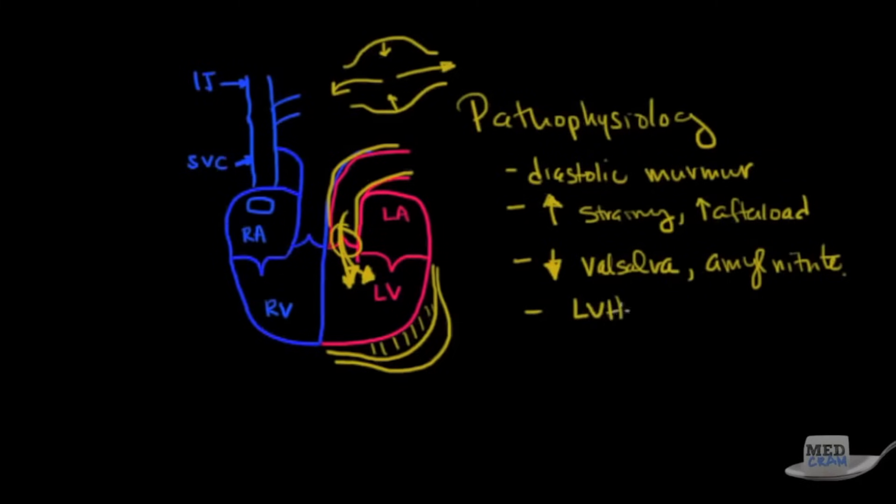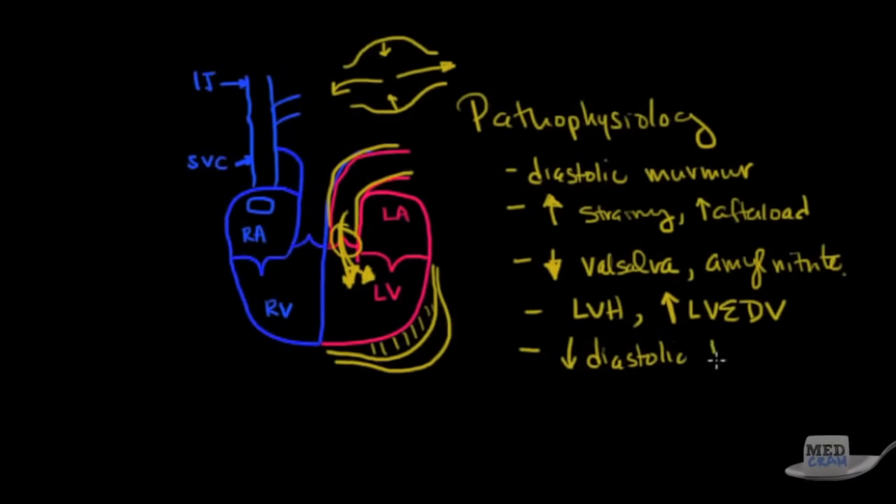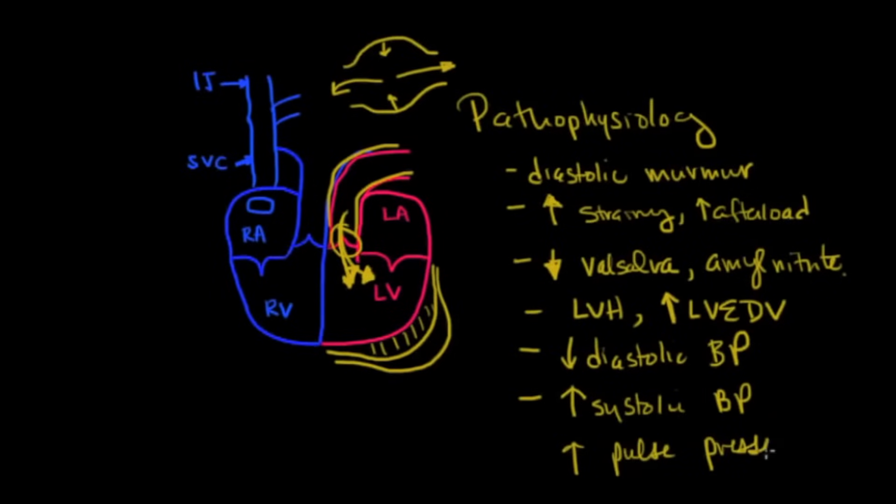So you're going to get left ventricular hypertrophy and you're going to get an increase in the left ventricular end-diastolic volume. Now, in addition to that, because during diastole you've got all this blood coming back into the left ventricle, you're going to see a low diastolic blood pressure. And because there's more blood in the left ventricle right before systole, more blood is going to be ejected out and so therefore you're going to see an increase in systolic blood pressure. This is known as an increase in the pulse pressure, which sets up some pretty interesting physical exam findings. So in other words, when you take the blood pressure and you take the systolic over the diastolic, you're going to see that the difference between those two pressures is going to go up.